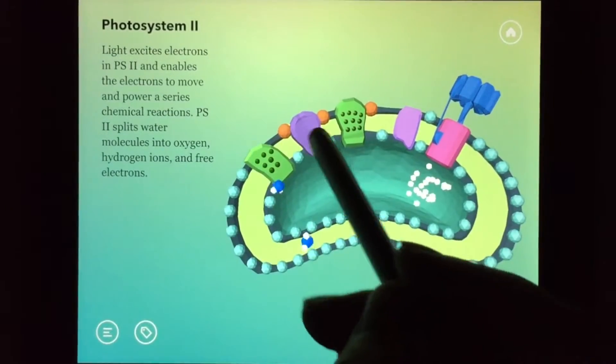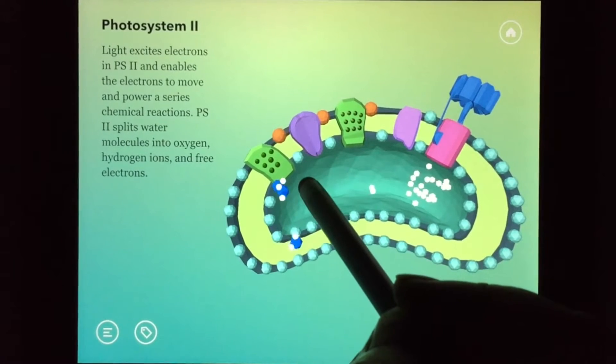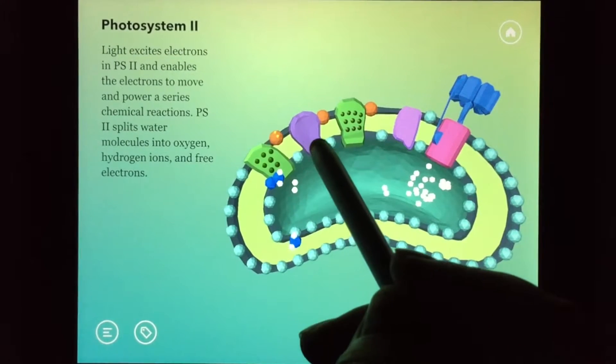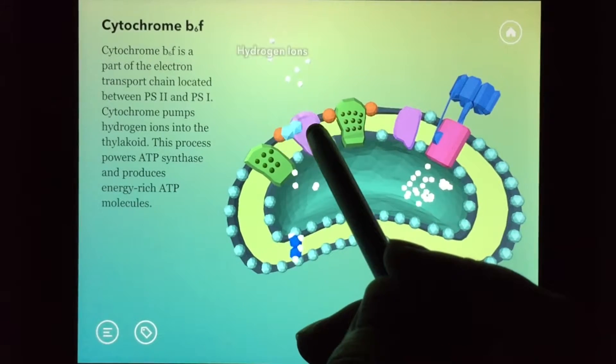As electrons pass through the electron transport chain, the energy from the electron is used to pump hydrogen ions from the stroma to the thylakoid.